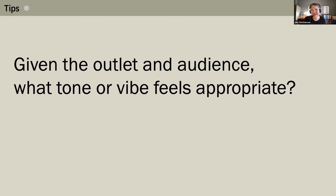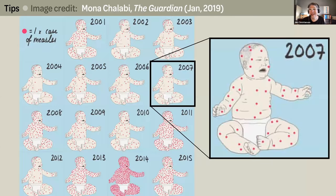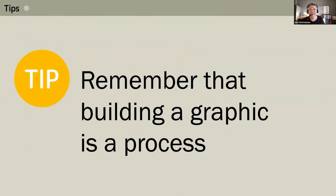Given the outlet and audience, what tone or vibe feels appropriate? The answer, along with the subject matter, will inform decisions related to rendering style and illustrative details. This is demonstrated by a pair of graphics that both show an exoplanet passing in front of a star. A coloring book for kids may exclude some technical details and jargon and can be rendered in a more playful style than a graphic on the same topic for adults. I also love this wonderfully quirky graphic by Mona Chalabi for The Guardian — it's really well-suited to engage general readers, but probably wouldn't be a great match for an academic journal.